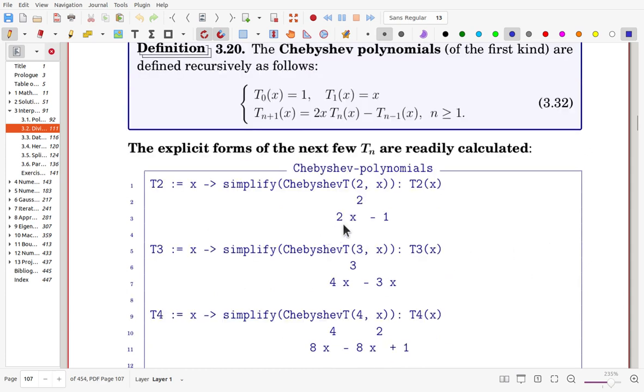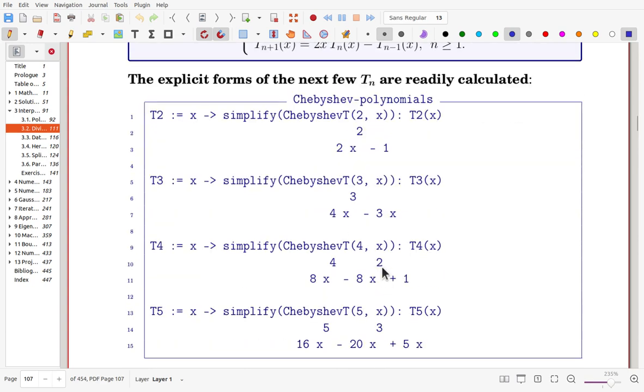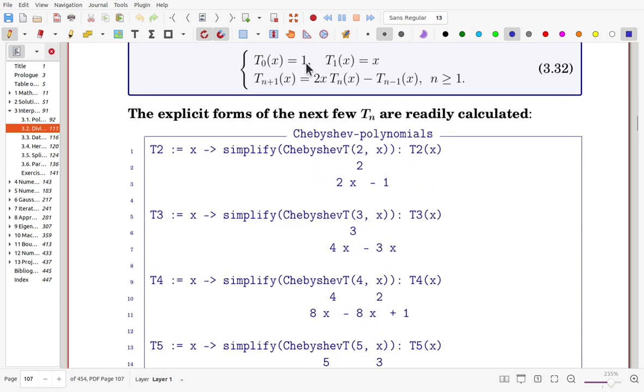Here we have explicit forms of Tn. T2 is 2x squared minus 1, and T3, T4, T5. We have several of them here. T2 includes only even order terms. And once this subscript is even, then includes only even order terms. And if it is odd, then also it is only odd terms.